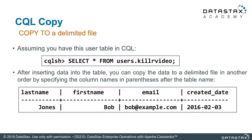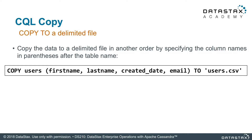Copy TO is when you want to move data from a Cassandra table into a file. Pick the name of the table and output it directly to the file system. The default is that it creates a CSV file of all the data inside that table. You can also specify the exact fields you want to copy out — for instance, if you only want four or five fields from a table with many columns. If you don't specify, it will dump the entire table.